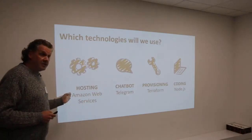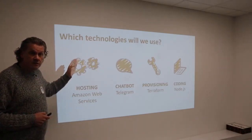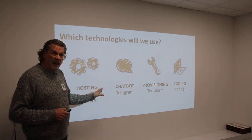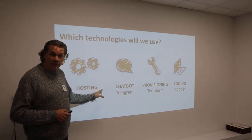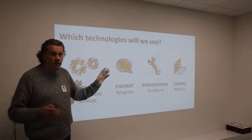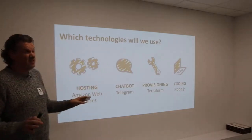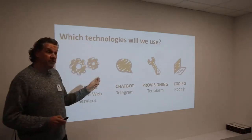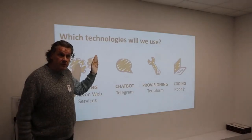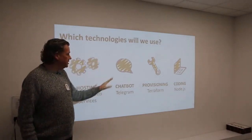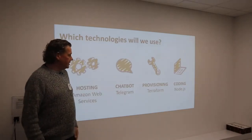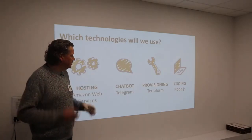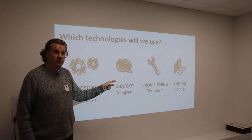What technology are we going to use today? We're going to use Amazon — who uses Amazon here in production? Great, so everyone should know Amazon Web Services. For chatbots, we could use Slack, but Telegram has great APIs. We're going to do some provisioning with Terraform, which lets us provision all of these pieces together without typing in manual consoles. And we're going to do some Node code running in Lambdas.